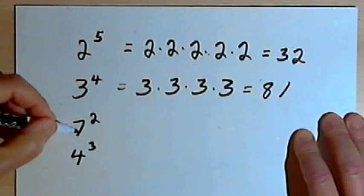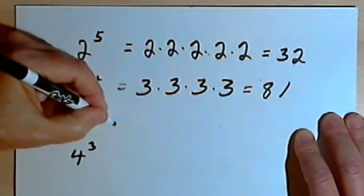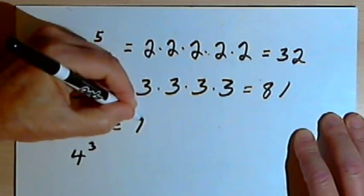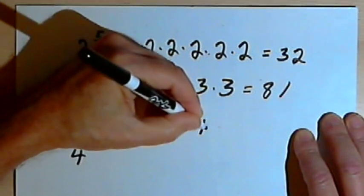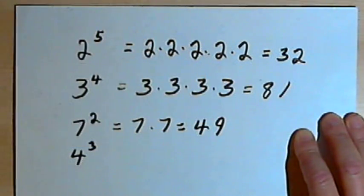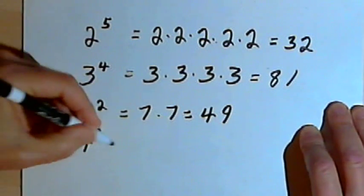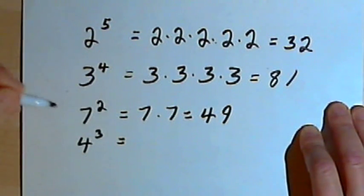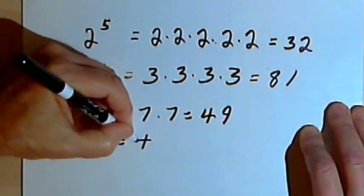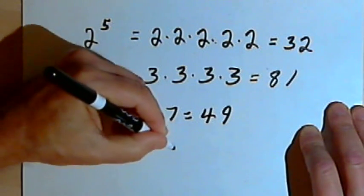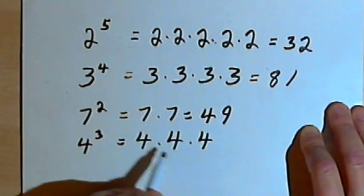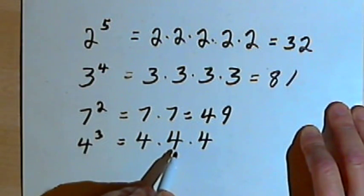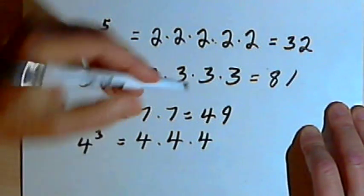I've got 7 to the 2nd power, or 7 squared — that's just 7 times 7, which is 49. And here I've got 4 to the 3rd power, or 4 cubed — that's 4 times 4 times 4. 4 times 4 is 16, times 4 again is 64.